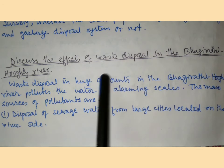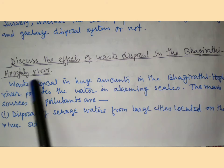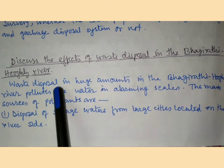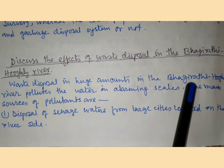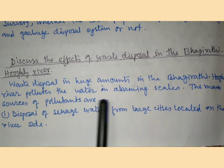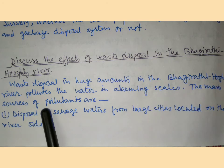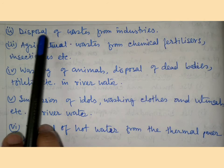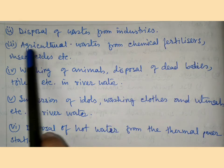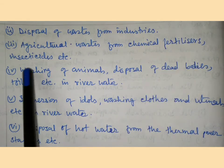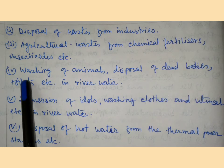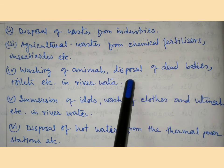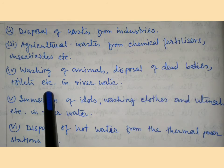Effects of waste disposal in the Vagirathi-Hooghly river: waste disposal in large amounts into the Vagirathi-Hooghly river pollutes the water at an alarming scale. The main sources of pollutants are: (1) disposal of sewage water from large cities located on the riverside, (2) disposal of waste from industries, (3) agricultural waste from chemical fertilizers and insecticides, and (4) washing of animals, disposal of dead bodies, and use of toilets in the river water.